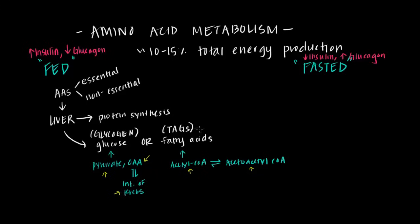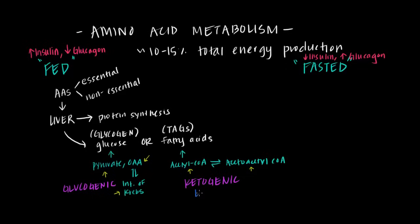Another classification you might hear is whether an amino acid is ketogenic or glucogenic. Ketogenic amino acids have carbon backbones that feed into precursor molecules for fatty acid synthesis — specifically acetyl-CoA or acetoacetyl-CoA — while glucogenic amino acids feed into pyruvate, oxaloacetate, or Krebs cycle intermediates for glucose synthesis. As a fun fact, lysine and leucine are the two exclusively ketogenic amino acids; some amino acids can contribute to both pathways.